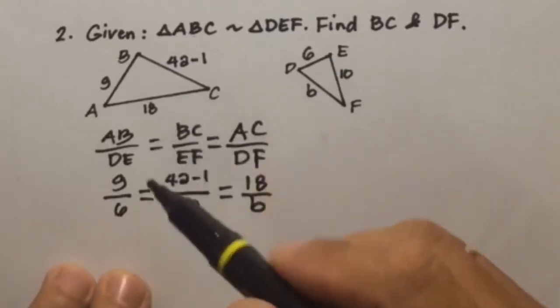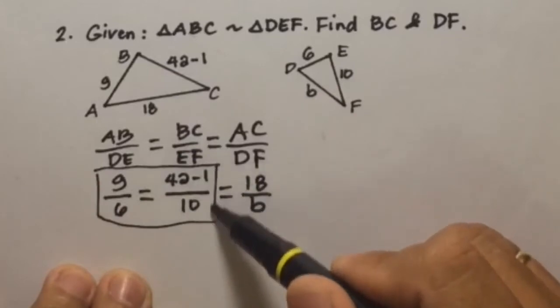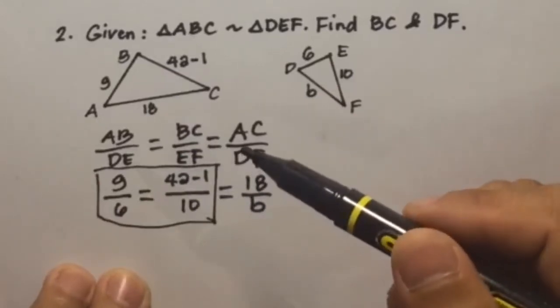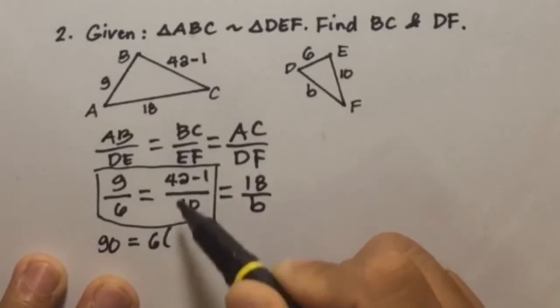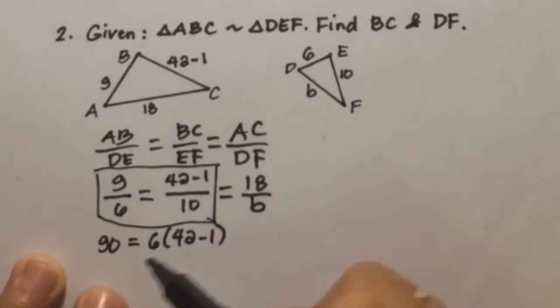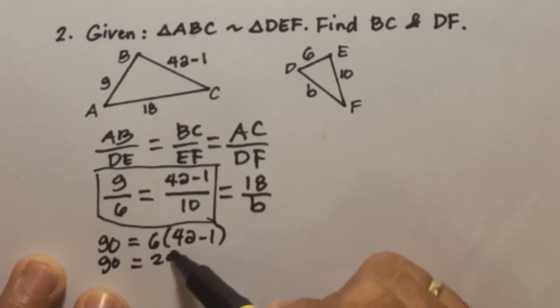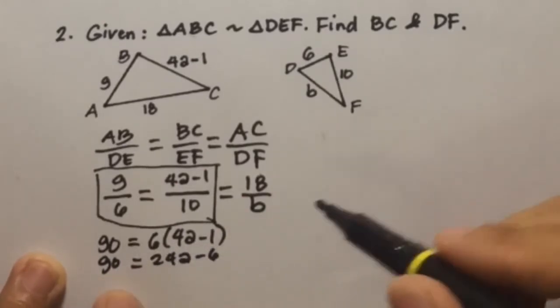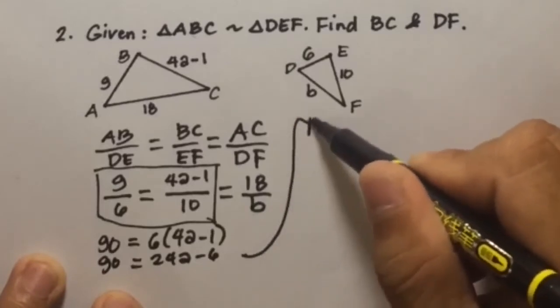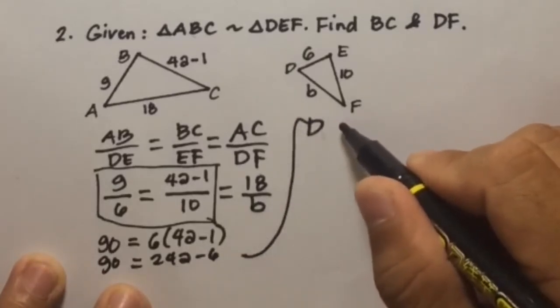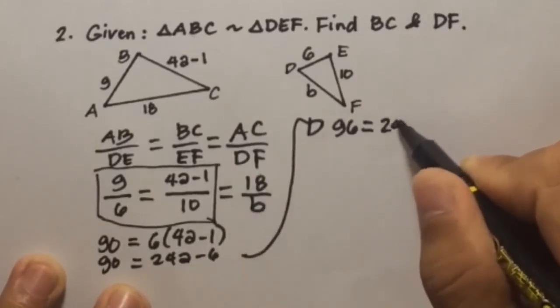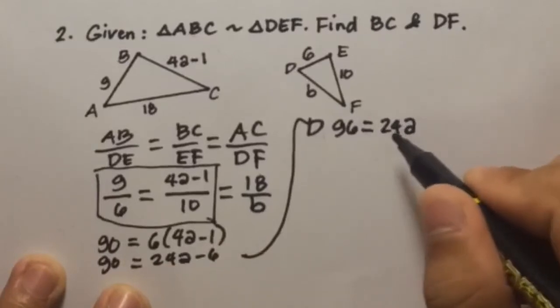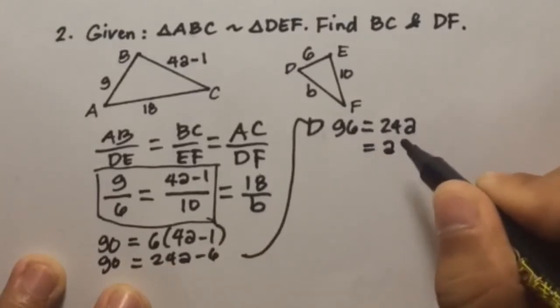So what we're going to do first is solve this to find the value of 4A minus 1. So if we cross-multiply, we can have 9 times 10 is 90, equals 6 times 4A minus 1. Then this is 90 equals 24A minus 6. This will become 90 plus 6 is 96 equals 24A, then divide both sides by 24, A will equal 4.